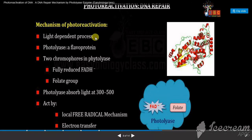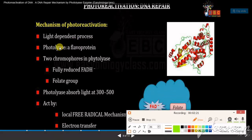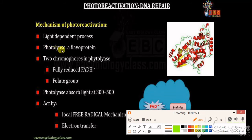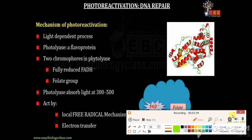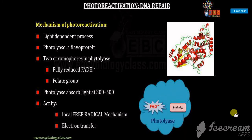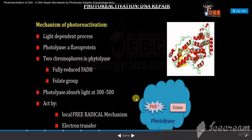The mechanism of photo reactivation: it is a light-dependent process and involves photolyase, which is a flavoprotein. It consists of two chromophores — one is fully reduced FADH and the second is a folate group. Photolyase absorbs light at 300 to 500 nanometers and acts by a local free radical mechanism as well as by electron transfer.